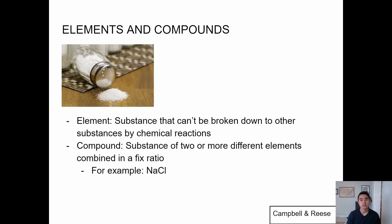An element is a substance that can't be broken down into other substances by chemical reactions, and when you start combining two or more elements you get a compound. Think of an element like sodium or chloride, and then a compound would be sodium chloride, or table salt.